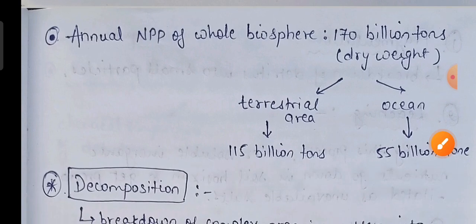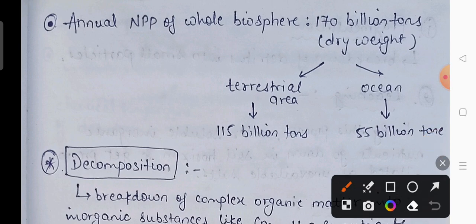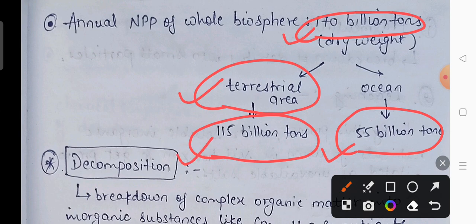Jo hamari puri net primary productivity hai, pure biosphere ki, woh around 170 billion tons hai, measured in dry weight. Inme se jo ocean hai woh account karte hain sirf 55 billion tons, aur baki ka jo terrestrial area rahega woh contribute karta hai 115 billion tons.